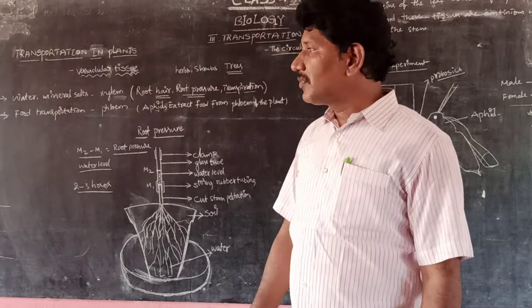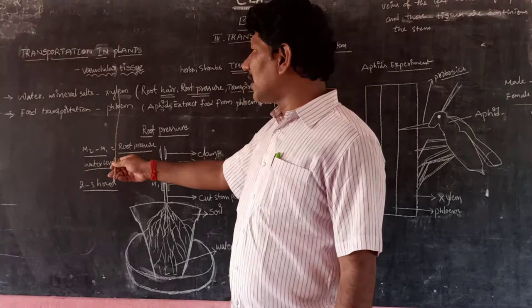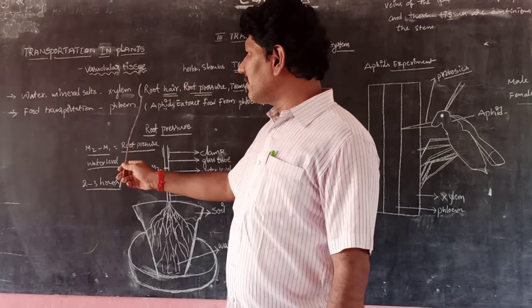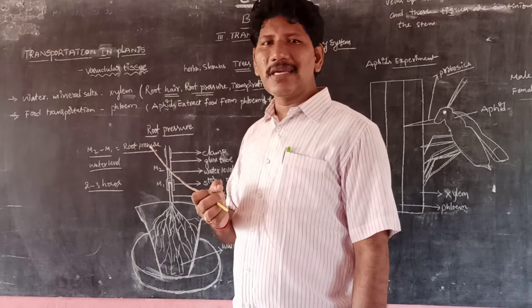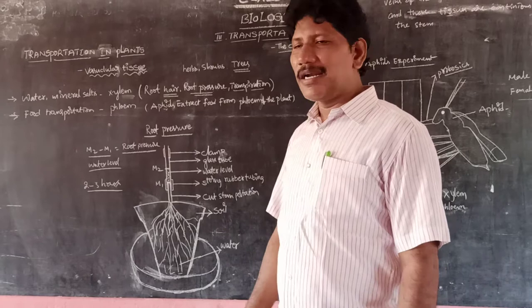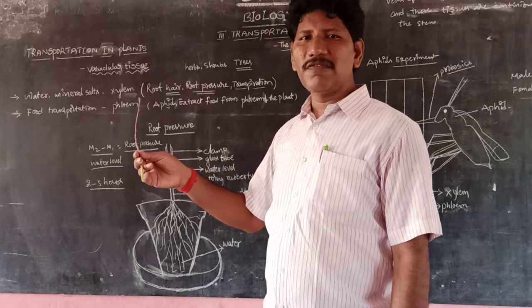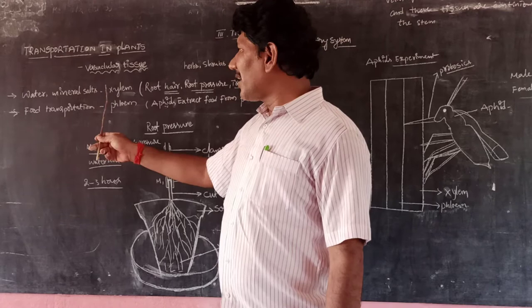Water and mineral salts are transported through the xylem. These are extracted from the soil to the xylem by osmosis. As we experienced in the previous video, root hairs absorb soil water and pass it to xylem tissue by the process of endosmosis, based on cell sap concentration. Water and mineral salts are exported to the xylem with the help of three parameters.